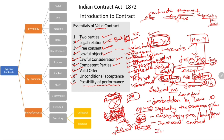The last essential is possibility of performance. At the time of entering into a contract, the subject matter should be possible to complete. If A does not have a car at all and tries to enter an agreement that he will transfer one when he gets it, that is not valid. For example, if India declares another country as an enemy country and there is a contract with that enemy country, it becomes impossible to perform — contracts with enemy countries are void. So at the time of entering a contract, the act should be possible to perform; if not, it is not a valid contract. These nine points are essentials of a valid contract: two parties, legal relationship, free consent, lawful object, lawful consideration, competent parties, valid offer, unconditional acceptance, and possibility of performance.